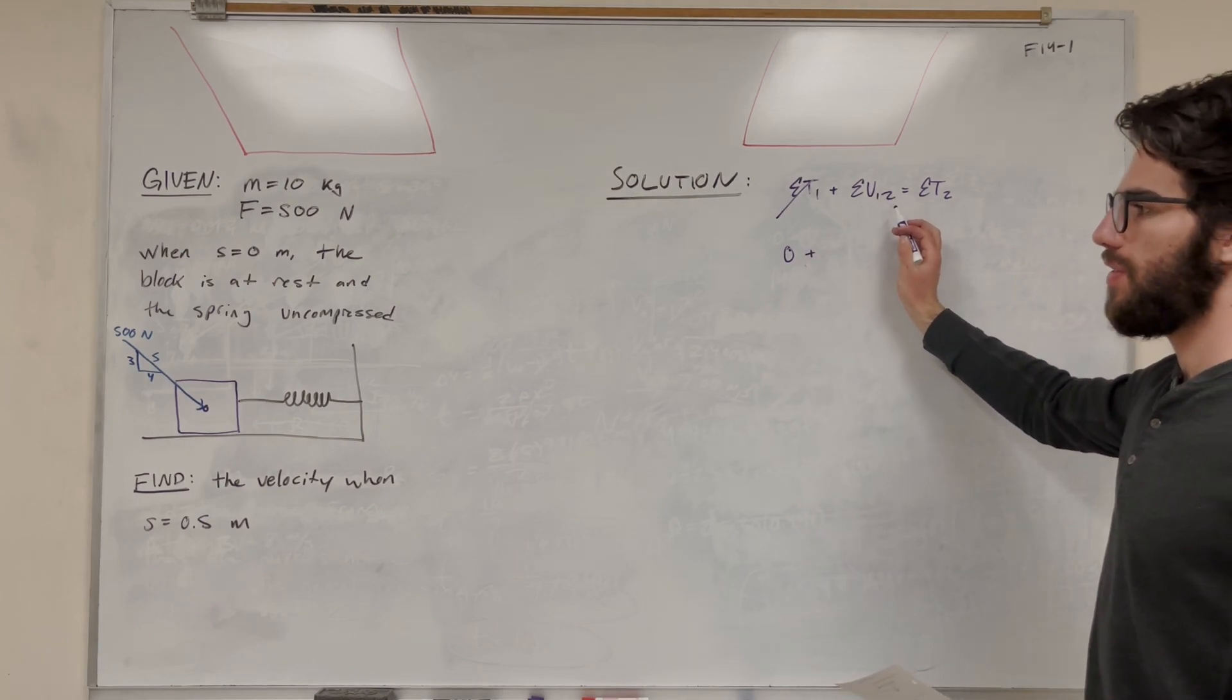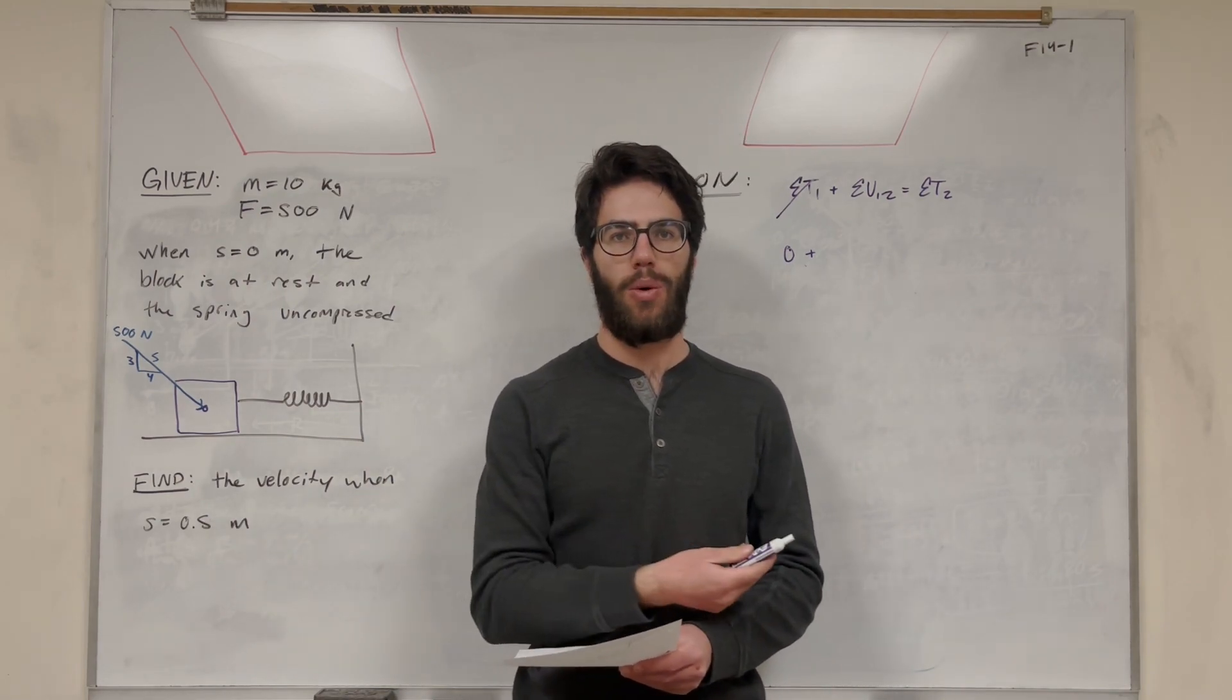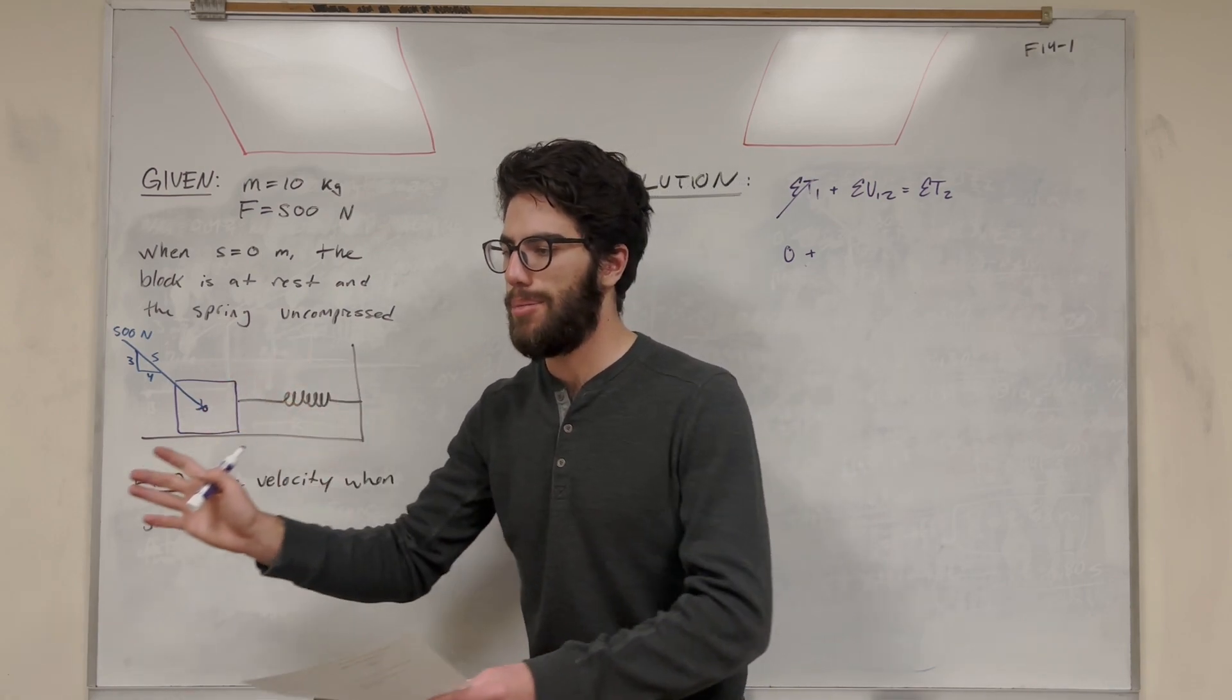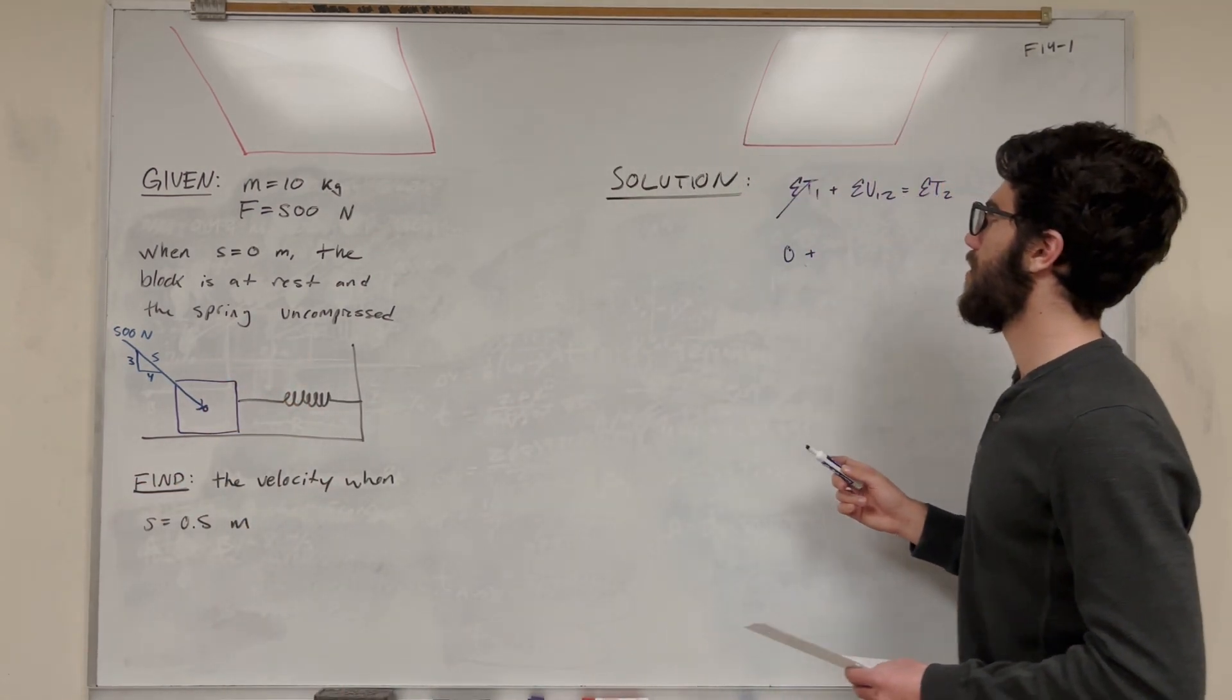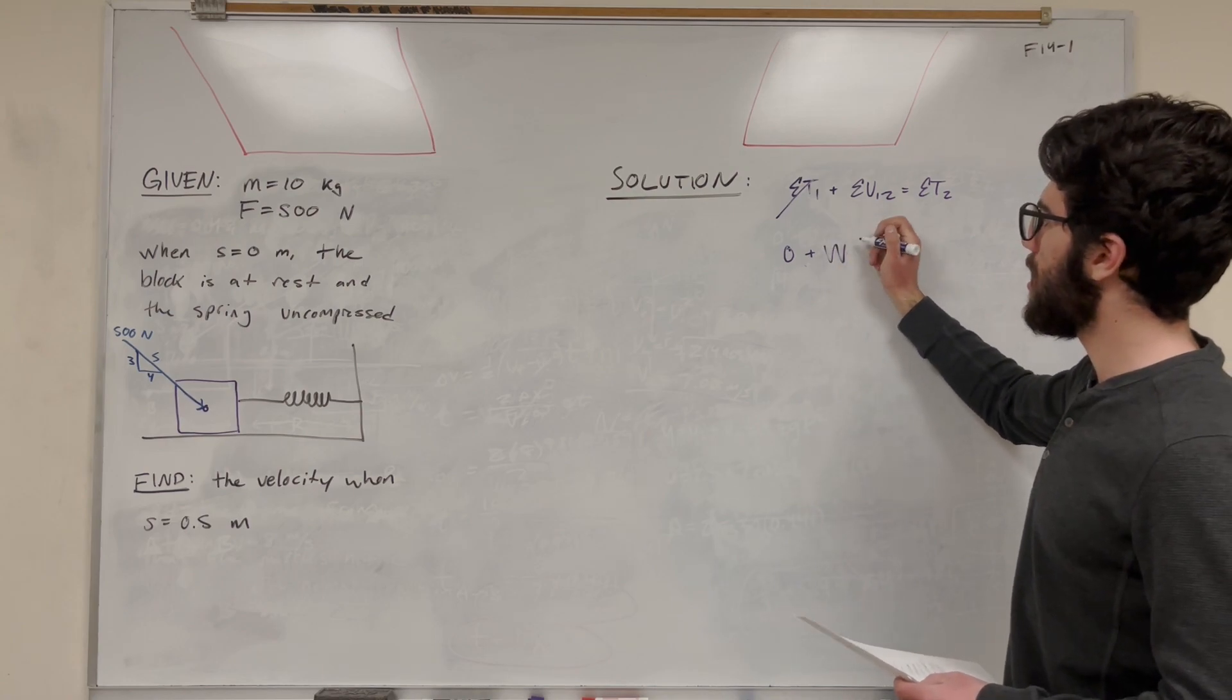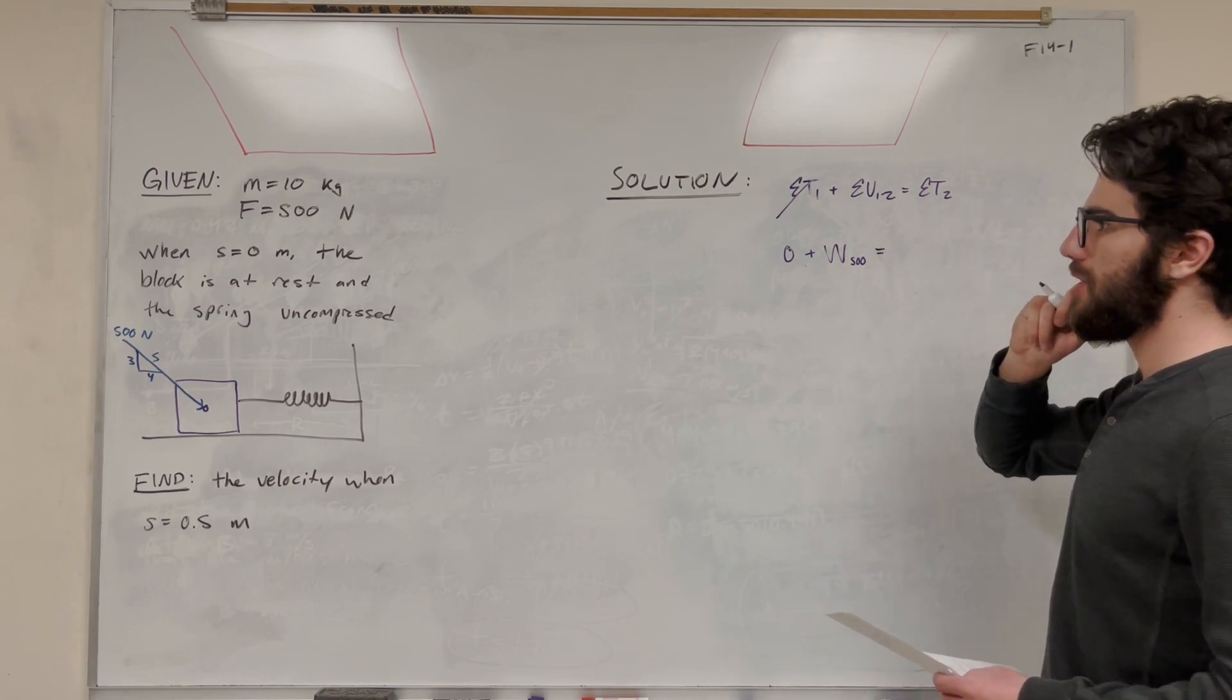So then the input of work from 1 to 2, the change in energy from 1 to 2, is going to be any force that we put in or take away. In that case, we're going to be putting in this 500 Newton force. That's going to be an input, and that's going to be where we put in for this change in energy from 1 to 2. Let's label this the work of 500 Newtons.